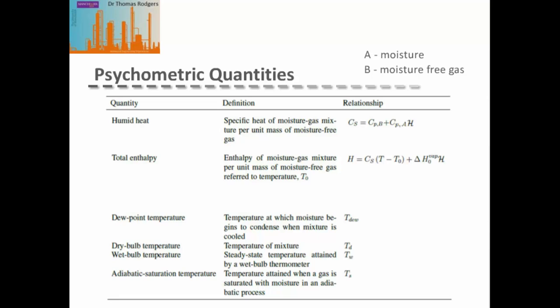There are four key temperatures. The dew point temperature is the temperature at which moisture begins to condense when the mixture is cooled. The dry bulb temperature is the temperature of the mixture. The wet bulb temperature is the steady-state temperature obtained by a thermometer whose bulb is covered by a small layer of the moisture. The adiabatic saturation temperature is the temperature obtained when the gas is saturated with moisture in an adiabatic process.